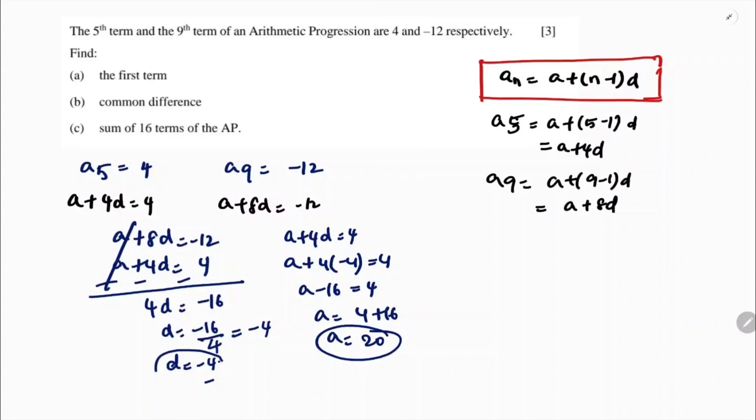Now you got A and D. In AP, if you know the values of A and D, they can ask for any term and we can easily find it. First term is 20 and common difference is minus 4.